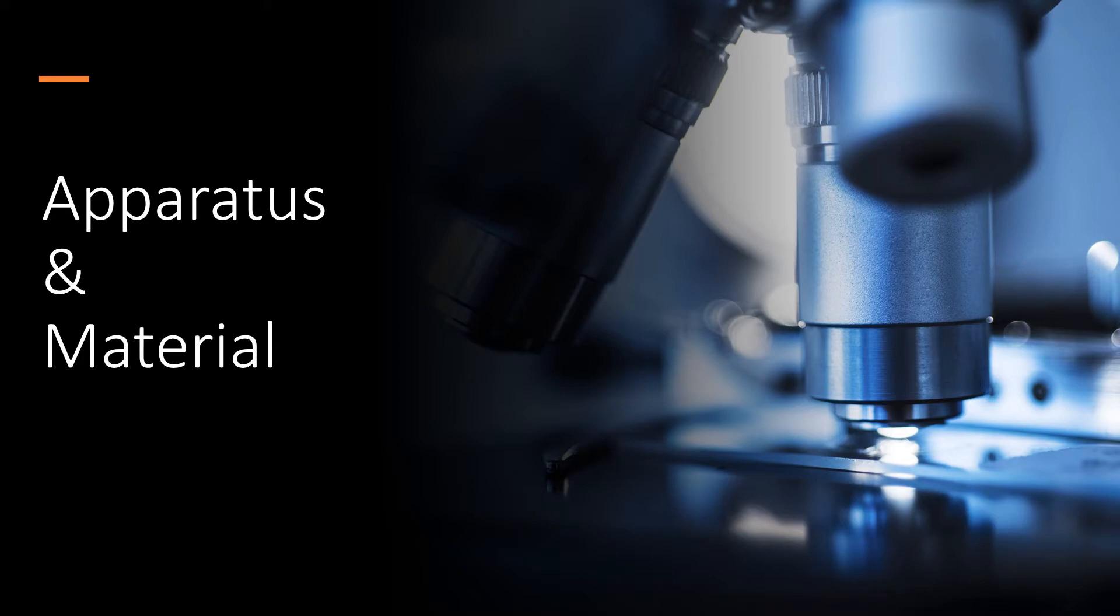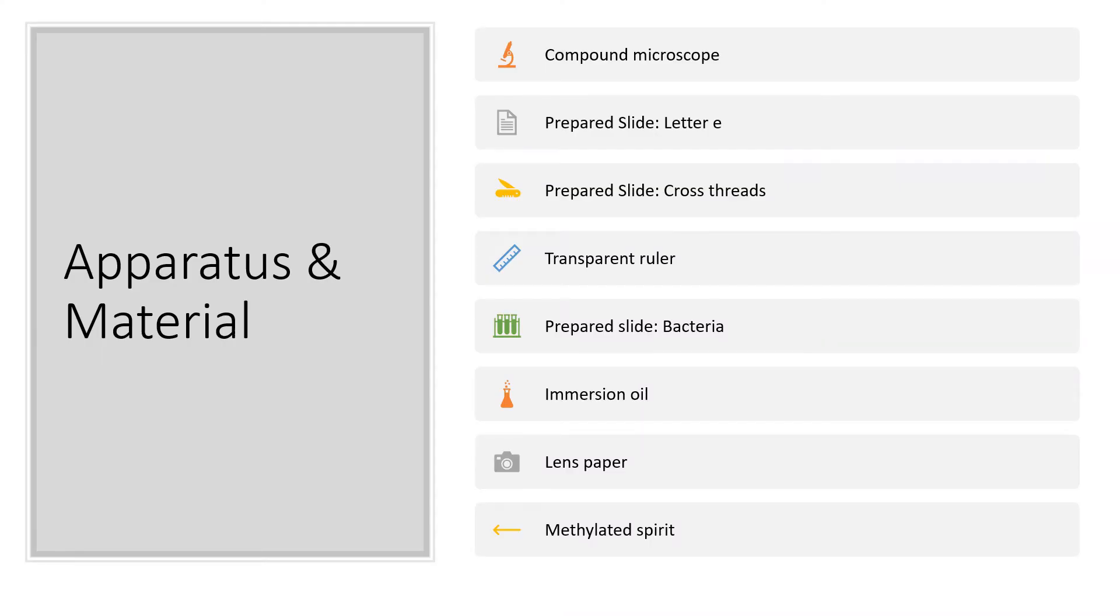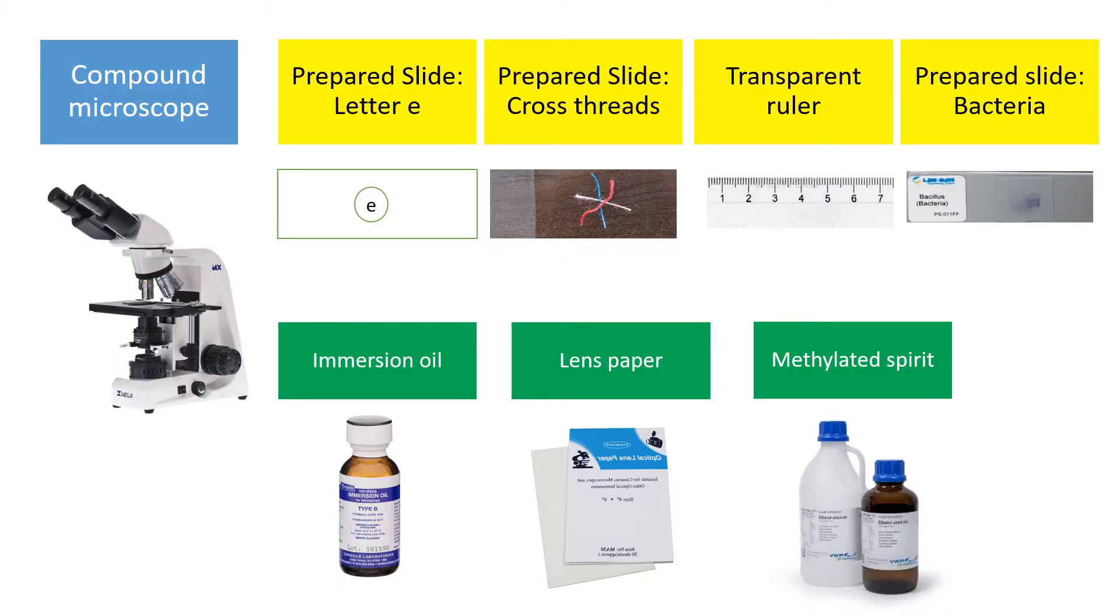For the apparatus and materials that we need to use in Experiment 1, include one compound microscope, four different sets of prepared slides, which are the letter E prepared slide, cross-thread prepared slide, the transparent ruler, and the bacterial prepared slide.